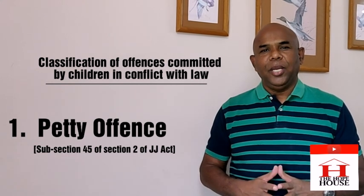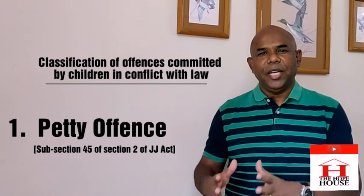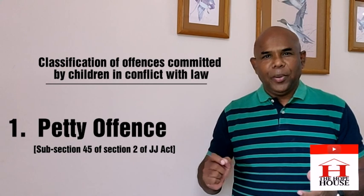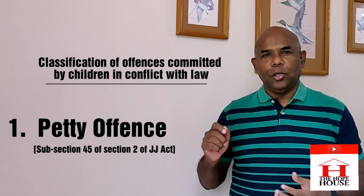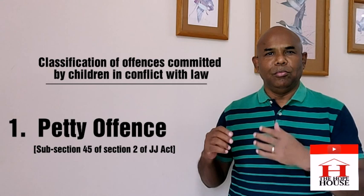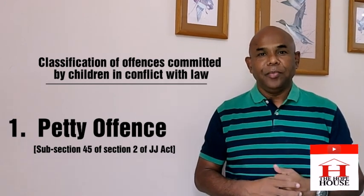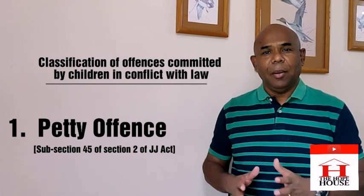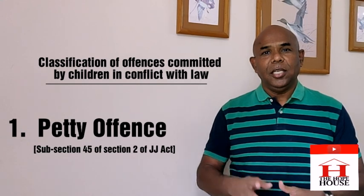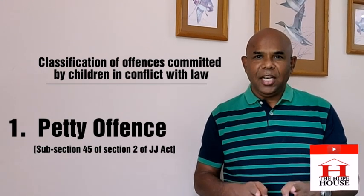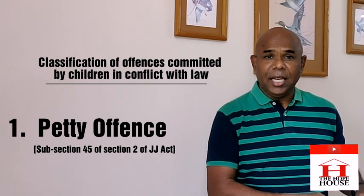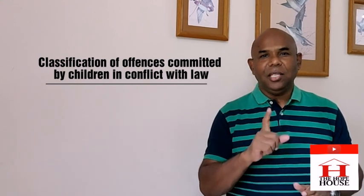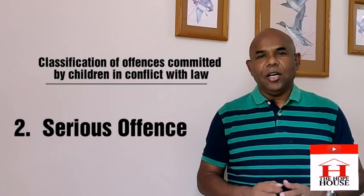I'll give you one simple example to explain this. Under the Indian Penal Code, there is punishment for committing forgery. Forgery means copying someone's signature — for example, forging somebody's signature to steal money. Under the Indian Penal Code, the punishment for an adult for committing forgery is two years. So if that similar kind of crime is committed by a child, it is called a petty offense.